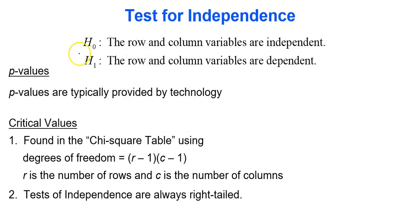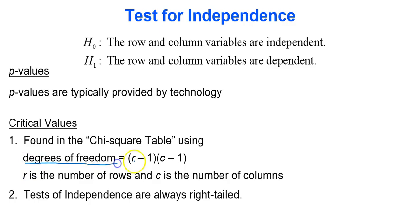To run a test for independence, we have our two hypotheses. The null is that the variables are independent, the alternative is that they are dependent. P-values will be provided by technology — Google Sheets in this case. Critical values can be found from the chi-squared table. The degrees of freedom for a test for independence is the number of row categories minus one times the number of column categories minus one. Tests of independence are chi-squared tests, therefore they are right-tailed.